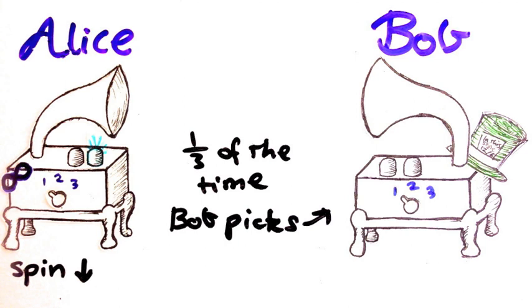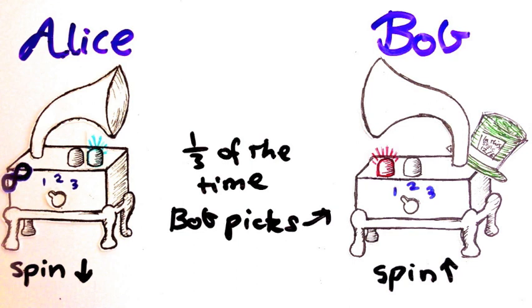So since A and B are entangled, Bob's particle will definitely have spin up in that direction, so the colours don't match.